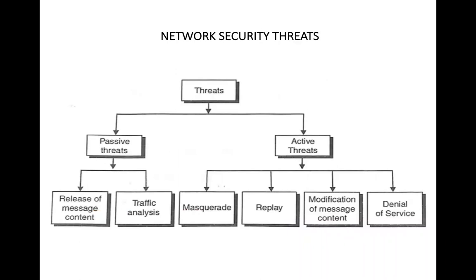We can divide these threats into two categories. The first is passive threats and the second one is active threats. In passive threats, no modification takes place — the attacker is only aware of the information, but the content is not going to be modified. This is the basic difference between passive threats and active threats.